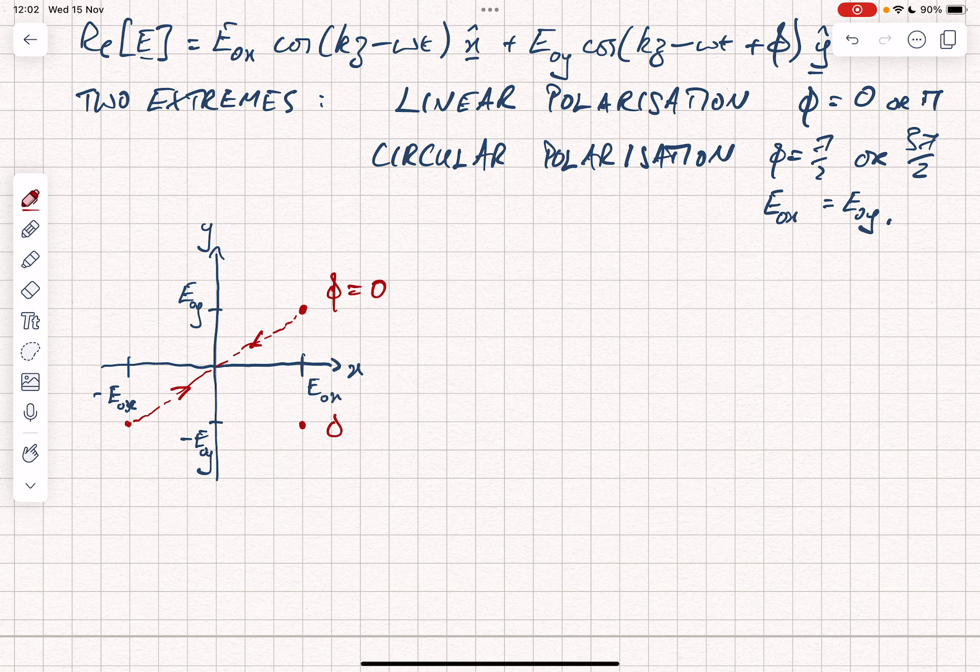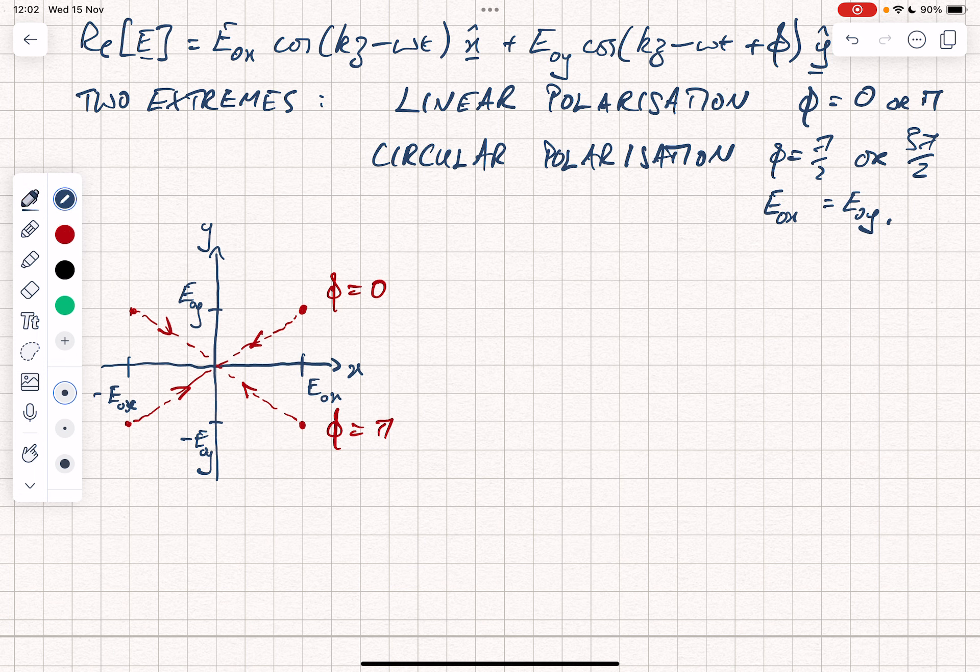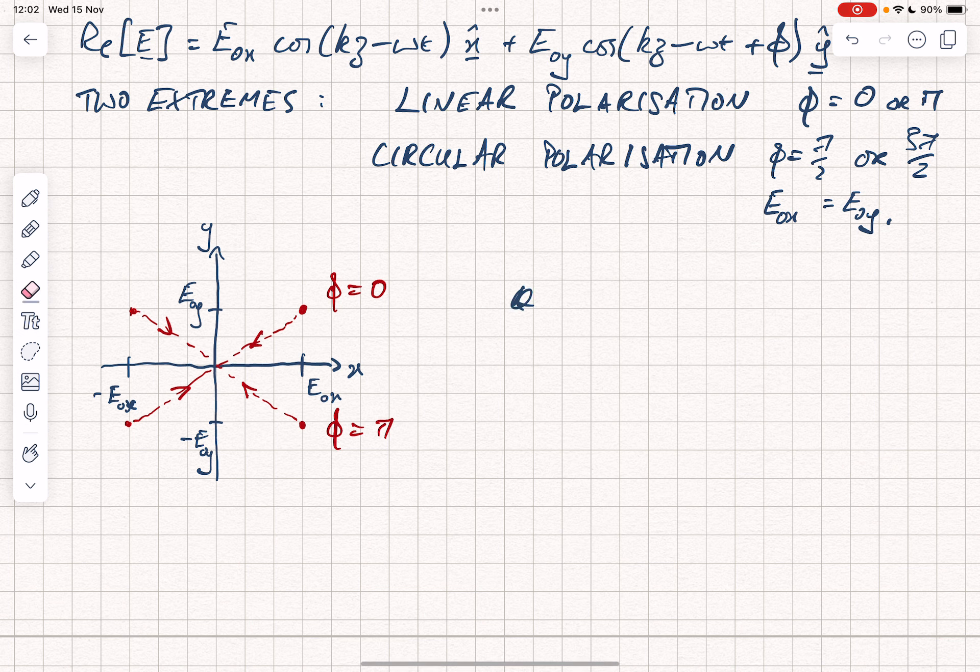What happens if phi is equal to pi? Well, if phi equals pi, then we've introduced a minus sign and that's just going to affect the y component. So we're going to see a gradual oscillation between these points over time if phi equals pi. So that is what's happening with linear polarization. The x and y components are in phase or perfectly out of phase.